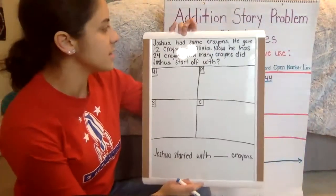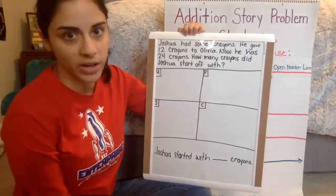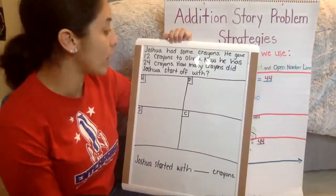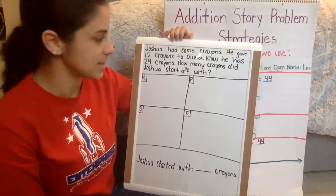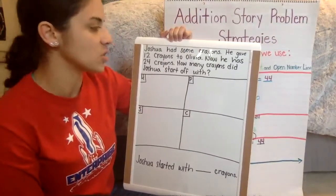So the problem says, Joshua had some crayons. He gave 12 crayons to Olivia. Now he has 24 crayons. How many crayons did Joshua start off with?